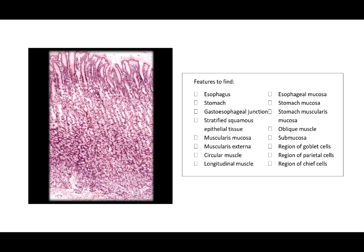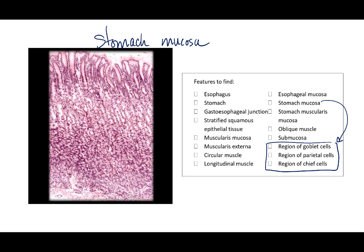This is a zoomed-in view of the stomach mucosa. Within the stomach mucosa, I would like you to know that the top is where we will have goblet cells. In the middle region, we will have our parietal cells. And at the lower portion, we will have our chief cells.